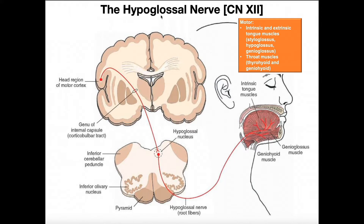The hypoglossal nerve innervates both intrinsic and extrinsic tongue muscles. For example, we have styloglossus, hypoglossus, and genioglossus. The suffix 'gloss,' 'glossus,' or 'glossal' refers to the tongue — in fact, the tongue's anatomical term is the glossus. So the hypoglossus comes in and innervates muscles beneath where the tongue is, and that's where the nerve gets its name: hypoglossal.